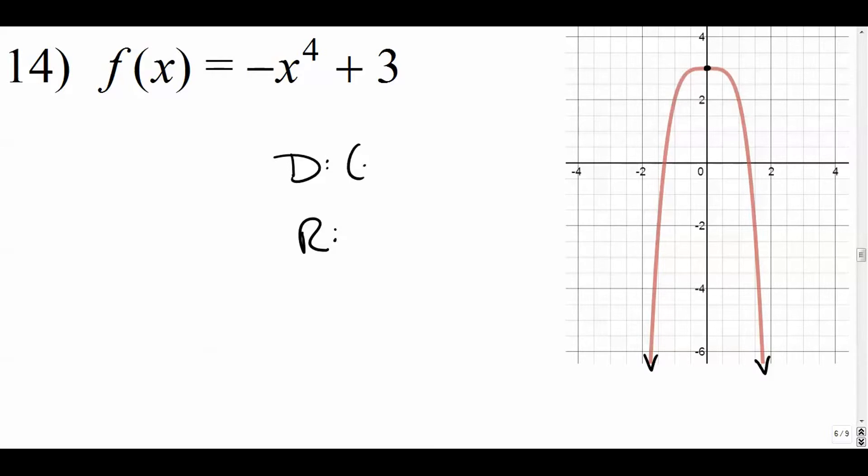The domain, on the other hand, has no restrictions. This is going to go left and right forever. As much as it goes down, it is still creeping a little bit to the left. As much as it goes down over here, it is still creeping a little bit to the right, and that'll do that forever. The range, on the other hand, goes from negative infinity to positive three. So it's everything below three. Three is our max, our max y value there, zero comma three.